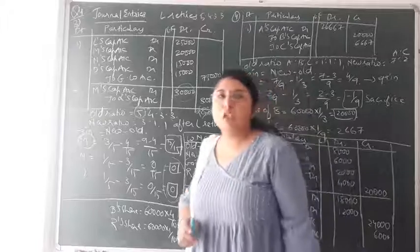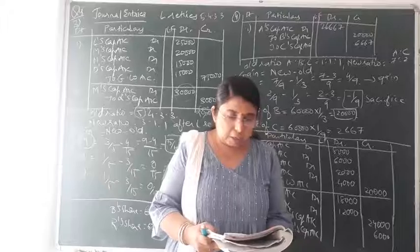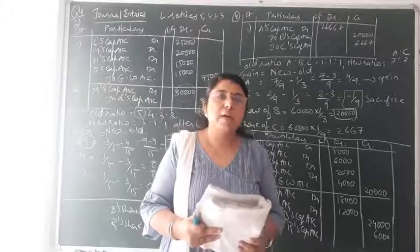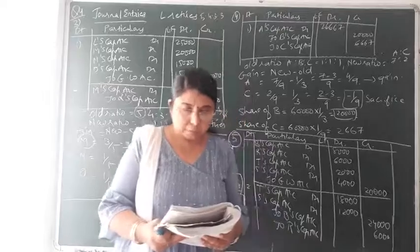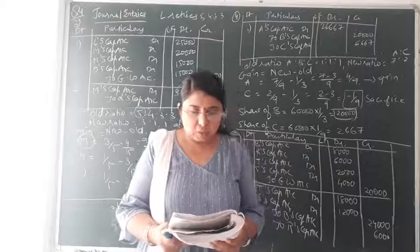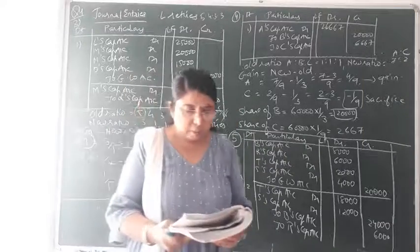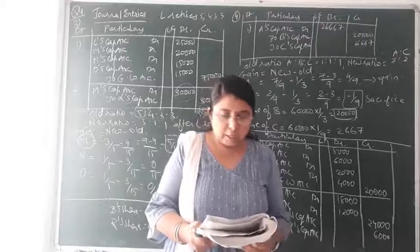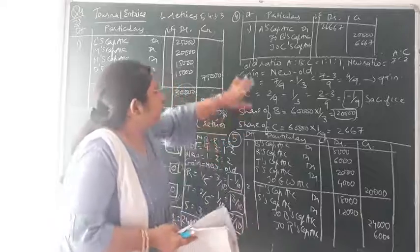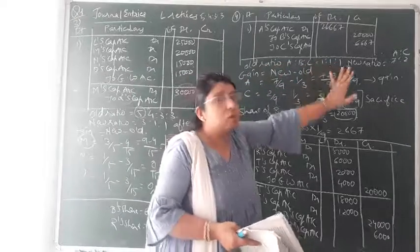Now moving on to question number 4. A, B and C are partners of a firm. Partner B is retiring. At the time of retirement, the goodwill of the firm is valued at Rs. 60,000 — meaning this is the new goodwill, not the old goodwill. The new profit and loss sharing ratio of A and C is decided at 7:2. The old ratio of A, B and C is 1:1:1 — if not clarified, the ratio is understood to be equal proportion.